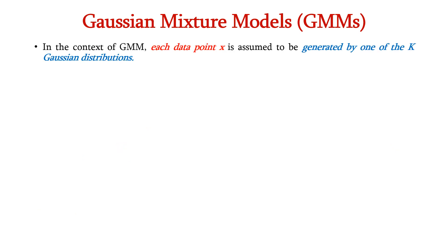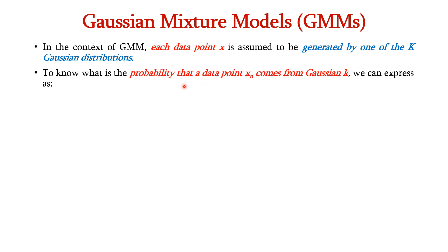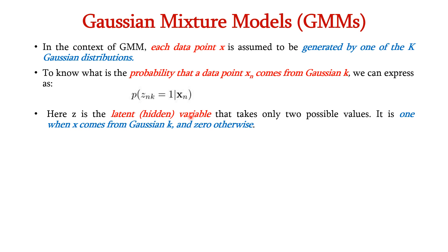In the context of GMM, each data point x is assumed to be generated by one of the k Gaussian distributions. To find the probability that a data point xn is coming from Gaussian component k, we express it as P(z_nk=1 | xn) — that is, given the data point xn, what is the probability it belongs to the kth Gaussian component? Here z is the latent variable, which takes the value 1 when x comes from that particular Gaussian component, and 0 otherwise.